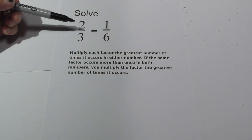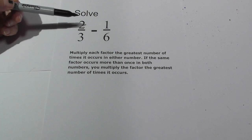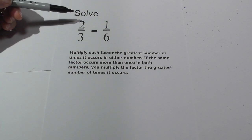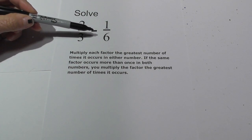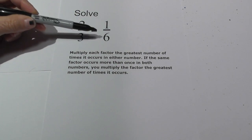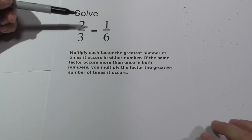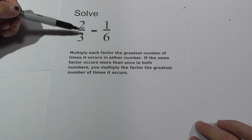Welcome to Moo Moo Math and Science. In this video, let's solve two-thirds minus one-sixth, and then I have another fraction that is similar. The challenge with this is it has an uncommon denominator, but we can do it — it's really not that tough.